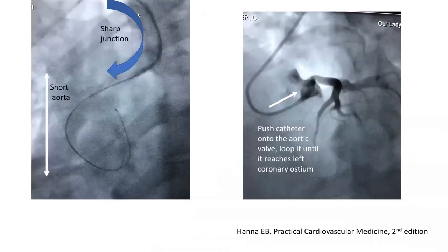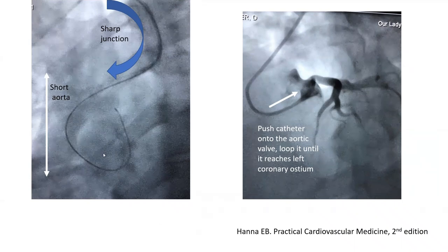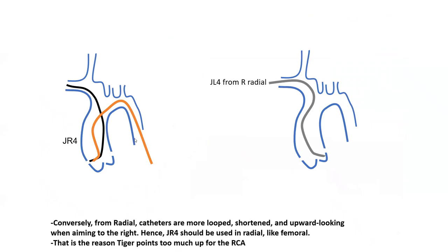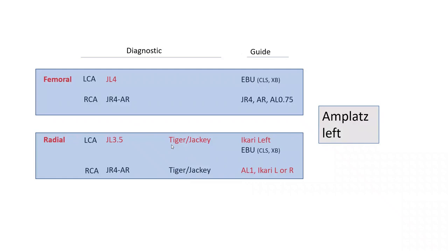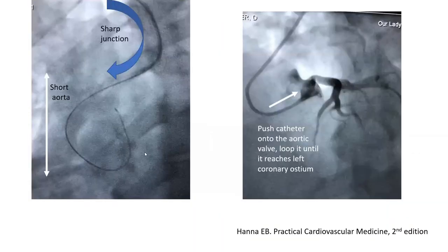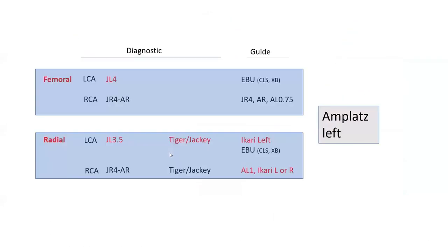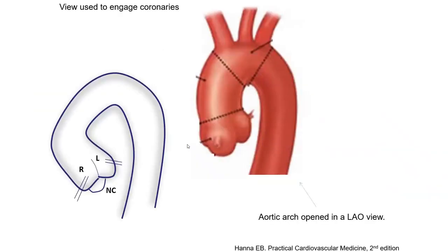When you see a sharp junction and short aorta, memorize that picture and don't waste time trying to engage from above. The immediate next step is to engage from below. If the current catheter doesn't allow you to loop from below, switch out. With Tiger and Jackie, it's harder to loop from below. It is easier with JL3.5 and easier with the Ikari left. For the pull technique: it works well with a long, stable aorta. For unstable catheters or interventions, looping from below is best.